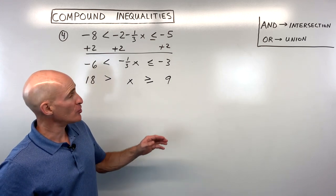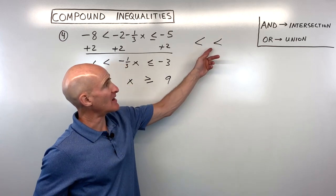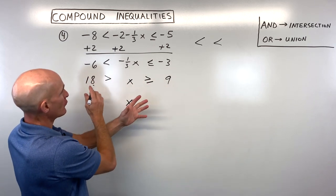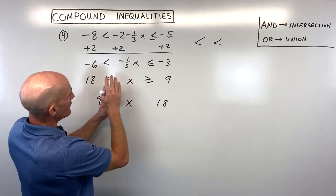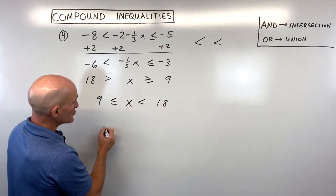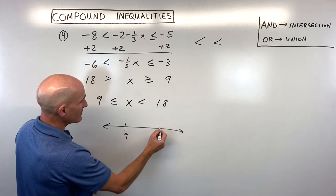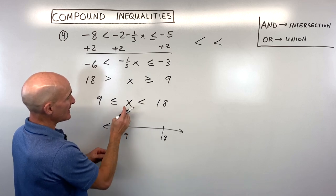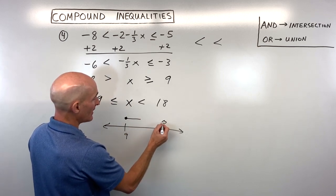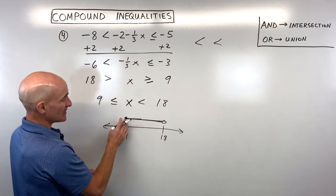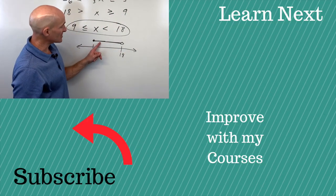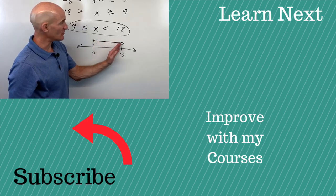We want the inequality signs pointing to the left, so we flip the whole inequality: 9 is less than or equal to x is less than 18. On the number line, x is sandwiched between 9 and 18 — it's greater than or equal to 9 (closed circle) and less than 18 (open circle). This includes not just integers but fractions, decimals, and everything in between these two points.